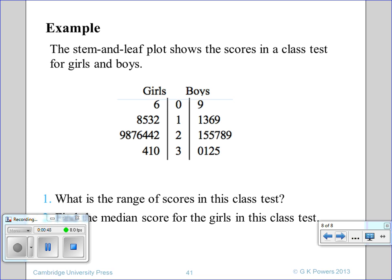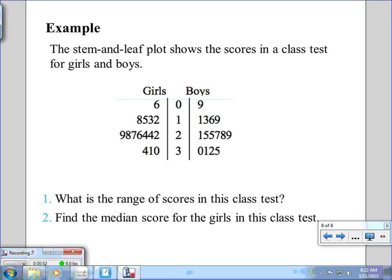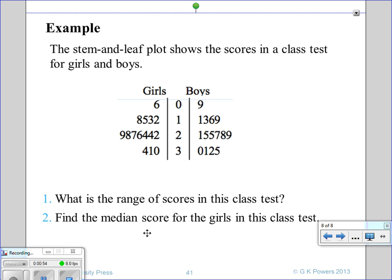As you can see the girls are a bit - whoops, there we go. What is the range of scores in this test? So the highest score would be this one, 35, and the lowest score would be our trusty little 6, which gives us an answer of 29 for our range.